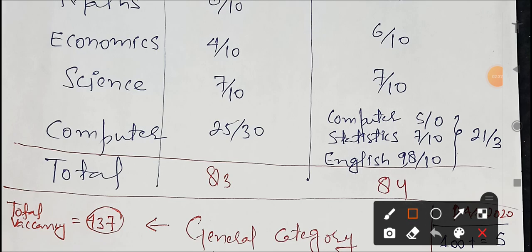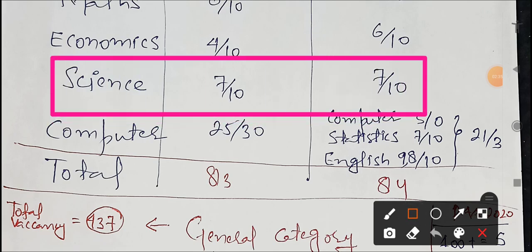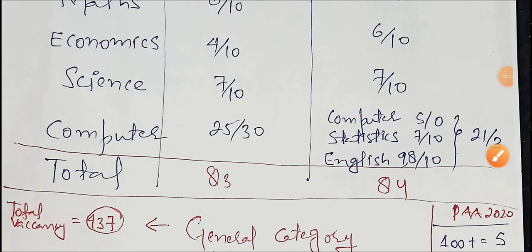For Science, usually the same level was seen in both exams, so we'll take 7 out of 10 as the average.